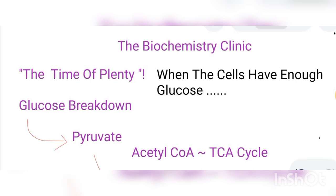This pyruvate is later converted to acetyl-CoA via decarboxylation reactions in the mitochondria. Remember that glycolysis occurs in the cytosol, and then in the mitochondria you have oxidative decarboxylation of pyruvate to produce acetyl-CoA, which is very key in the TCA cycle.